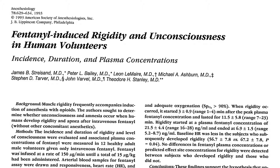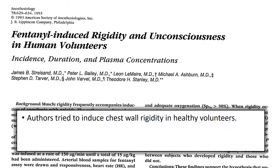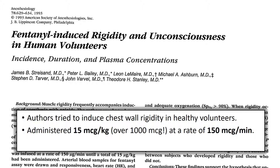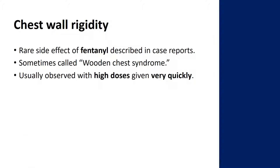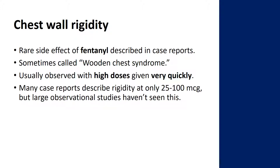There's a study from the 90s where they tried to induce chest wall rigidity in healthy 20- to 30-year-olds, giving 15 micrograms per kilogram at a rate of 150 micrograms per minute — over 1,000 micrograms total, which is a crazy dose compared to the 25 to 50 micrograms we typically use. They induced chest wall rigidity requiring BVM in about 50% of cases. There are also tons of case reports describing chest wall rigidity with only 25, 50, or 100 micrograms, though large observational studies haven't been able to replicate that. So it's super rare, but if it does happen you need to be prepared.